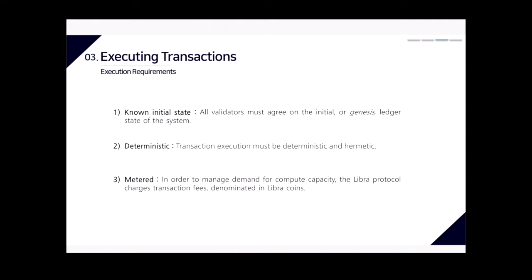There are three execution requirements for transactions. First is the non-initial state: core components of the blockchain such as the logic of accounts, transaction validation, validator selection, and Libra coin are defined as Move modules. The genesis state must define these modules via a special transaction, and all validators must agree on the initial genesis ledger state.